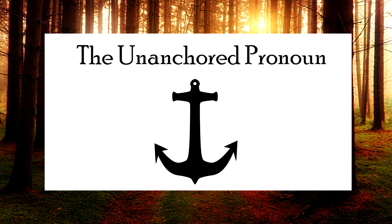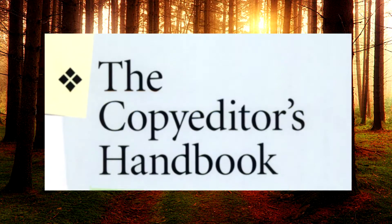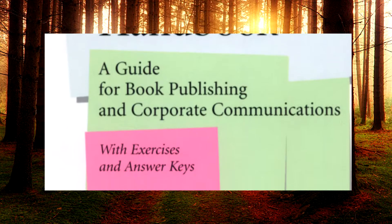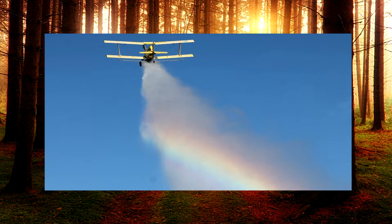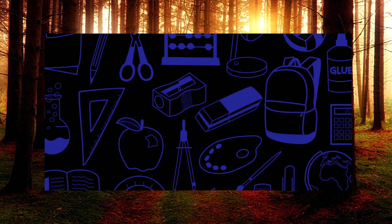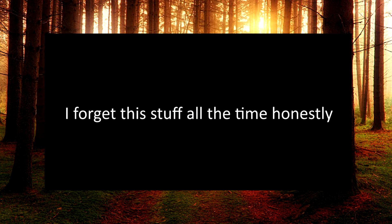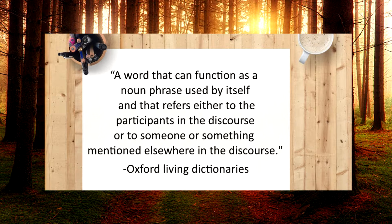Let's start with the unanchored pronoun. According to the copy editor's handbook, an unanchored pronoun is the use of a pronoun or pronoun phrase when it is unclear which noun the pronoun refers to. Sorry to dump literary jargon on you this episode, but if you can't remember what a pronoun is from high school English, I'll give you a quick refresher. A pronoun is a word that can function as a noun phrase used by itself and that refers to either the participants in discourse or to someone or something mentioned elsewhere in the discourse.